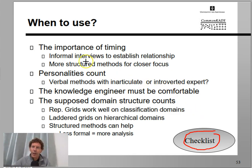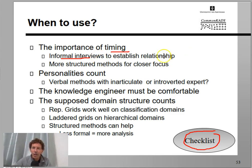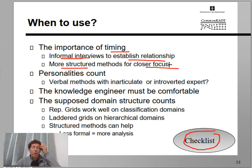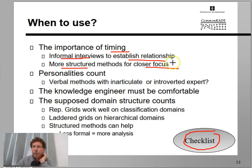First is the importance of timing. You start with informal interviews at the beginning — that's useful for two reasons: you don't know anything yet, so you're not in a position to do more structured things, and it also helps you establish a personal relationship with the expert. Then you move to increasingly more structured methods for more focus. Clearly, you don't start with a repertory grid; you start with interviews, then self-reporting, 20 questions, or card sorting, and only then close off with a repertory grid.